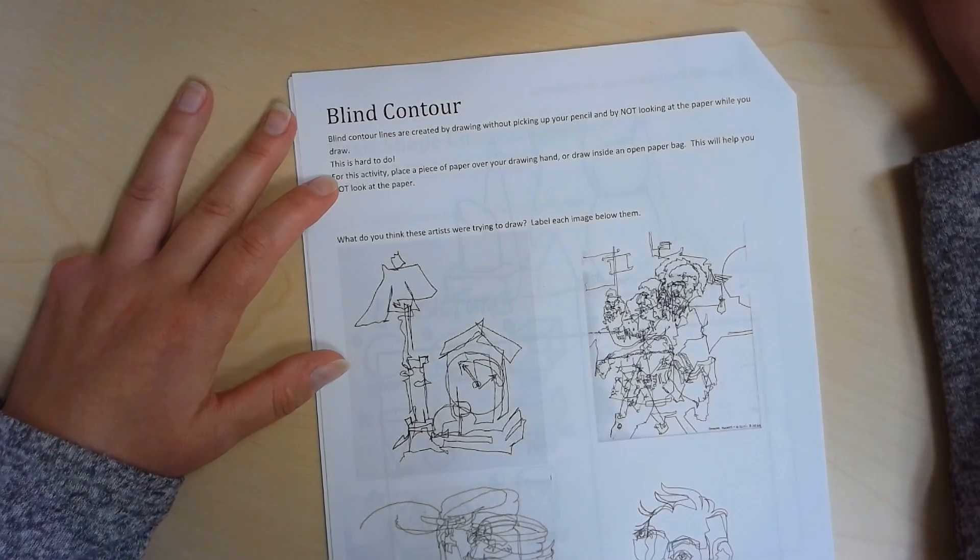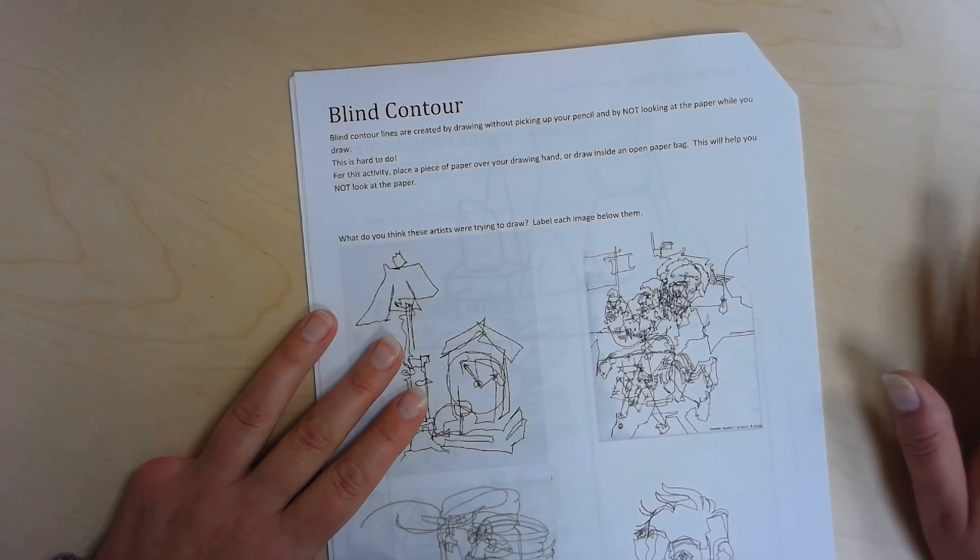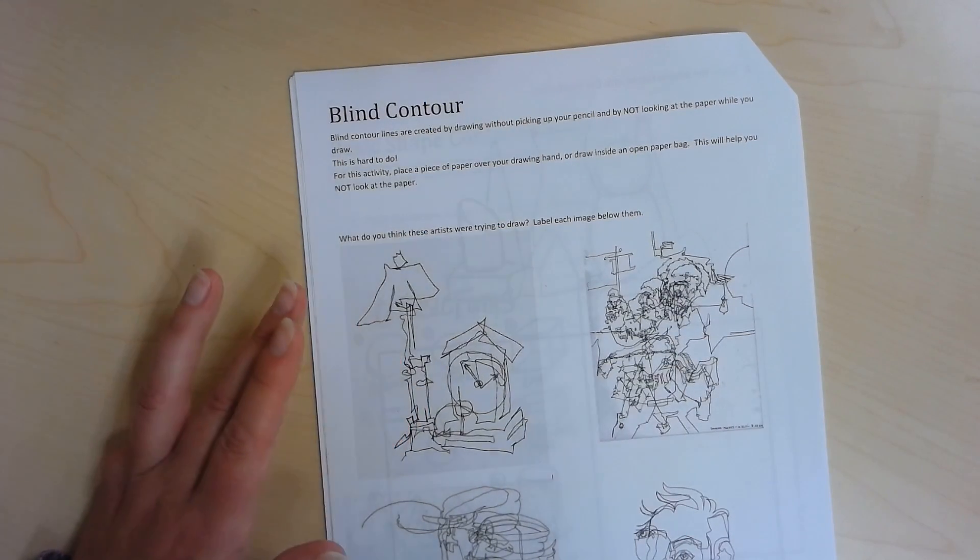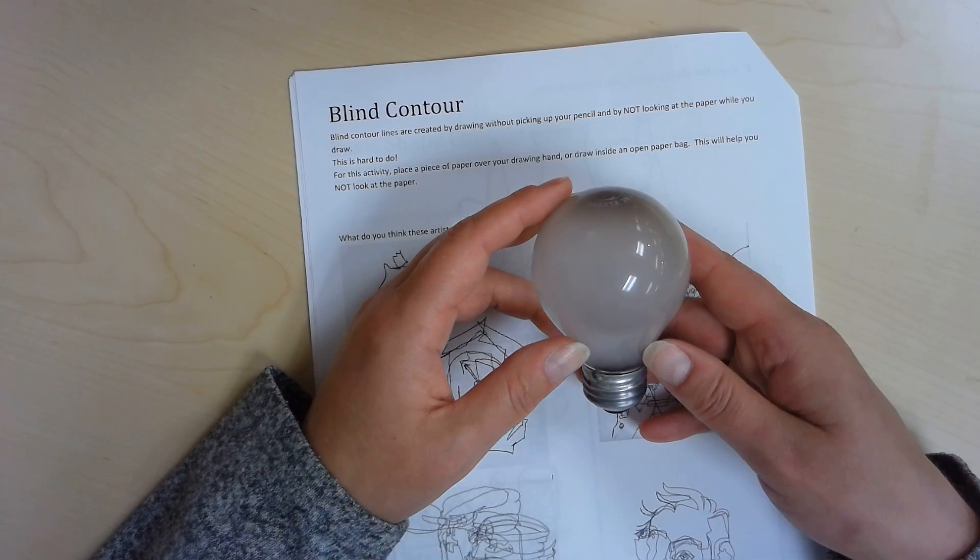Because you're constantly looking at the paper, you're hardly looking at the thing that you're drawing, which is a mistake. Let's say you want to draw this light bulb, and if you are not paying attention...